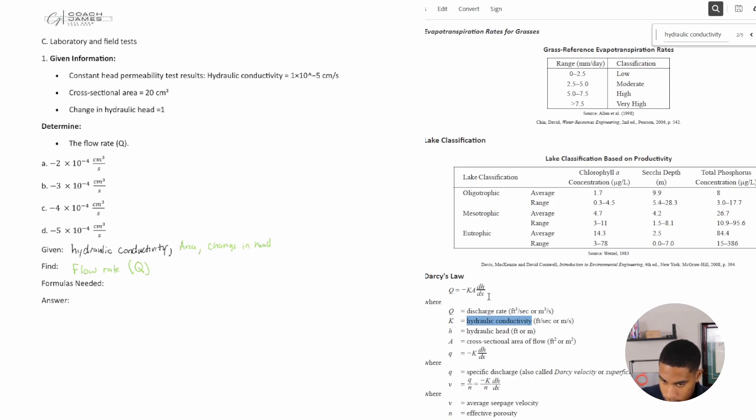All right, the formula needed is Q equals negative K times A times dH over dX. I'm going to write out each variable. Q equals question mark—we're solving for that. K equals my hydraulic conductivity, which is 1 times 10 to the negative 5 centimeters per second. It's key to know all my answer is in centimeters cubed over seconds, so if things are in centimeters or seconds, that's perfect.